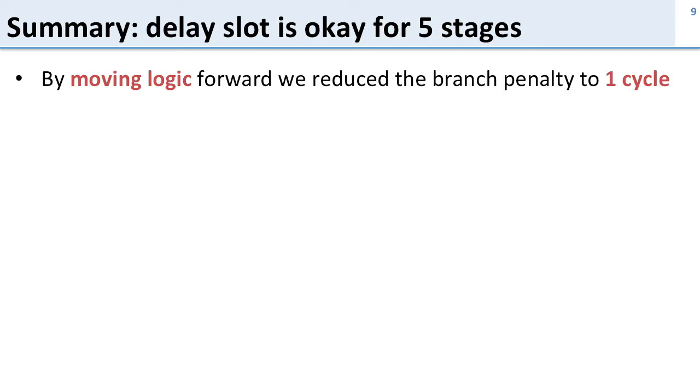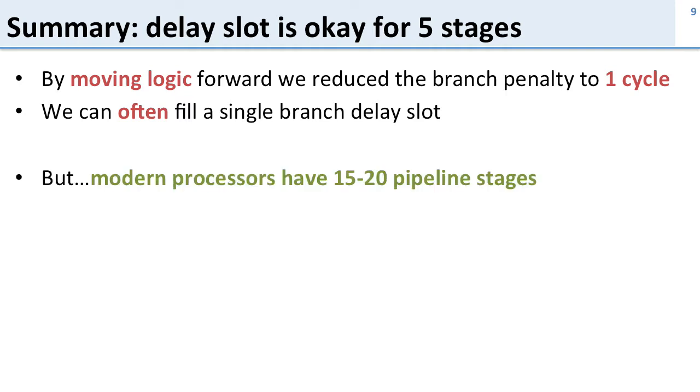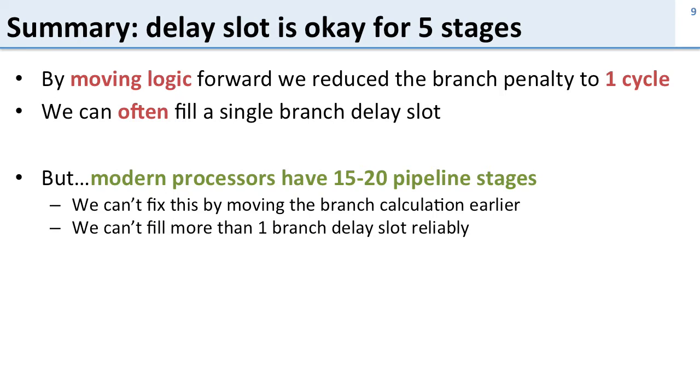So the summary of branch delay slots is that they're okay for five stages. We saw that by moving logic forward, we could reduce the branch penalty to one cycle, and we can often fill a single branch delay slot. The problem is that modern processors have 15 to 20 pipeline stages - many more stages than our simple five-stage pipeline. In this case, we can't fix them by just moving the branch calculations earlier, and we can't fill more than one branch delay slot reliably. It's hard enough to find an instruction for every branch to use. If we have a much longer pipeline, we may need 10 or 12 instructions for every branch, and that just isn't possible. And obviously we can't stall, because if stalling in our five-stage pipeline hurt us a lot, stalling in a much longer pipeline is going to hurt a lot more.